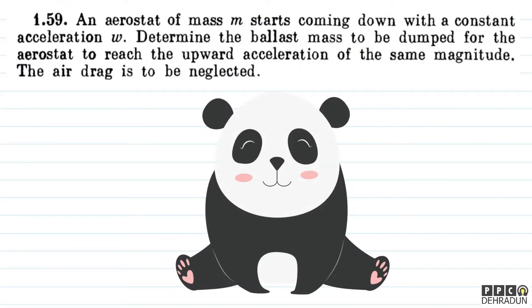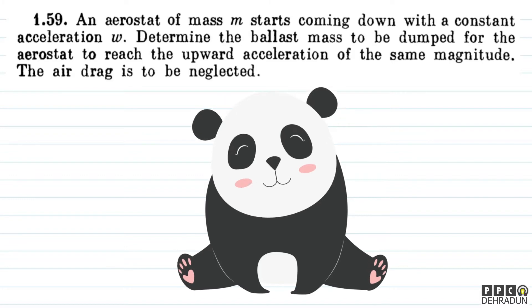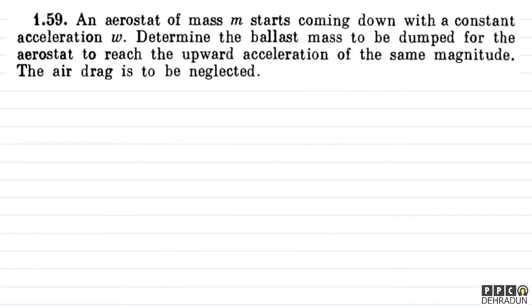Let's have a look at this beautiful problem from Irodov. The question says: an aerostat of mass M starts coming down with a constant acceleration W. Determine the ballast mass to be dumped for the aerostat to reach the upward acceleration of the same magnitude. The air drag is to be neglected.